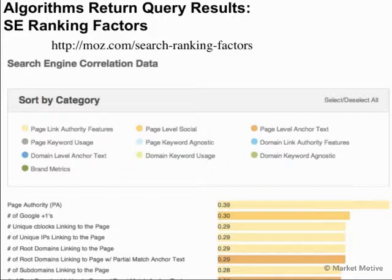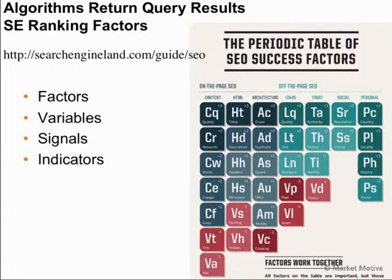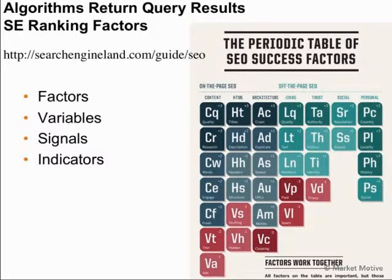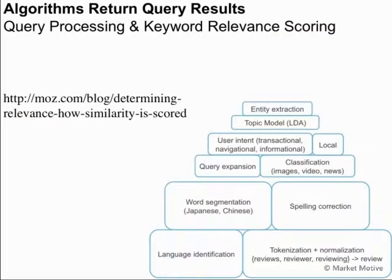We can see how Moz breaks it down into page link authority, page-level social, and many different signals and factors. These are synonymous terms — factors, variables, signals, indicators — all things that impact where your web page shows up in the results, determined by the algorithm. We don't want to be chasing the algorithm; we just want to understand how it works, and if there are mild, subtle changes we can update our site appropriately. There are a lot of very complex functions going on at the query and algorithm level.